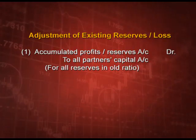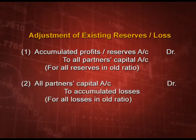Coming to the next topic: how to adjust existing reserves. Existing reserves must be distributed among the old partners in their old ratio. The entry is: accumulated profits or reserves account debit to all partners capital accounts in the old ratio. And if there are accumulated losses, it is a reverse entry - all partners capital account debit to accumulated losses. So partners will gain from profits and bear the losses.